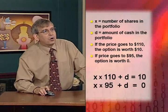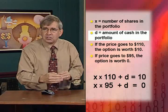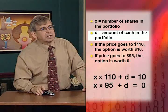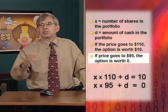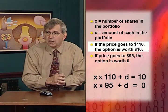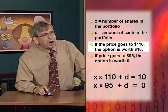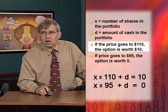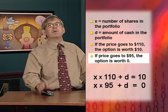This is an example where we're trying to actually quantify the value of risk itself. The price of the stock will either be $110 or $95 in one month's time. If the price goes to $110, the option to buy the stock for $100 is worth $10, because you can buy at $100 and immediately sell for $110. If the stock price descends to $95, the option will be worth nothing.